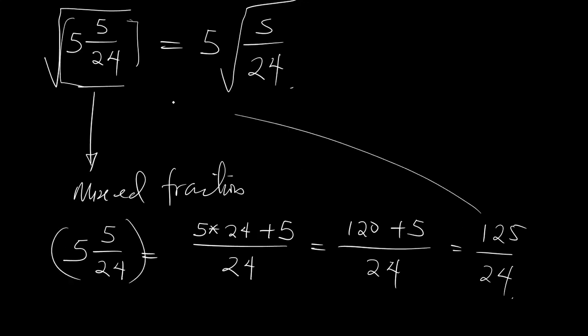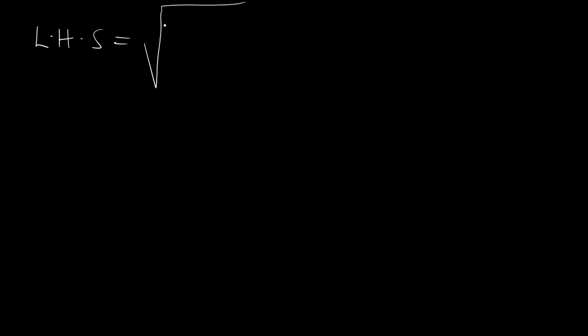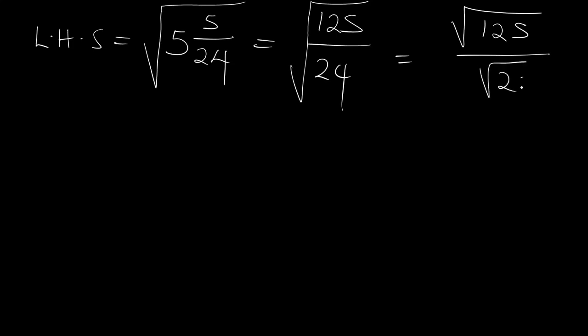Now we need to plug this into the square root. The left-hand side of the equation is equal to the square root of 5 whole number 5 over 24, which is the same thing as the square root of 125 all over 24. According to the rule, if you have the square root of 10 all over 10, it is the same thing as the square root of 10 all over the square root of 10.